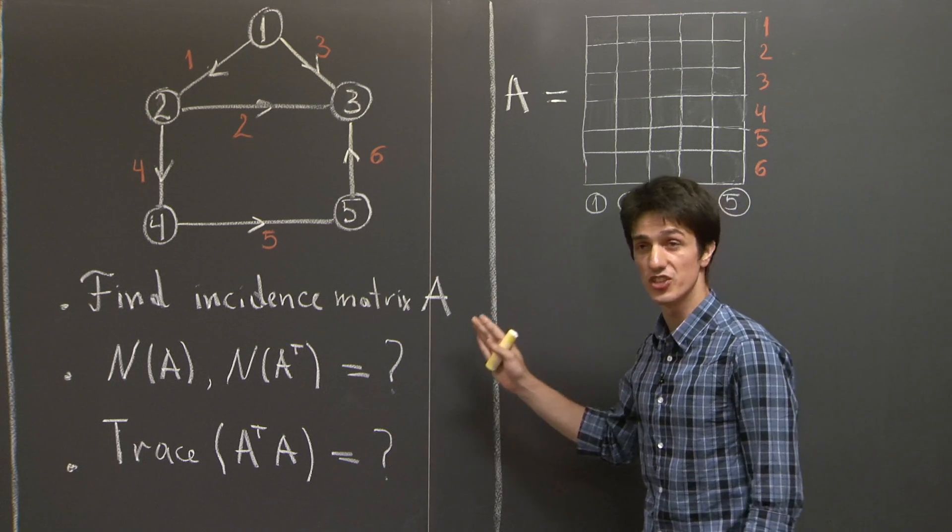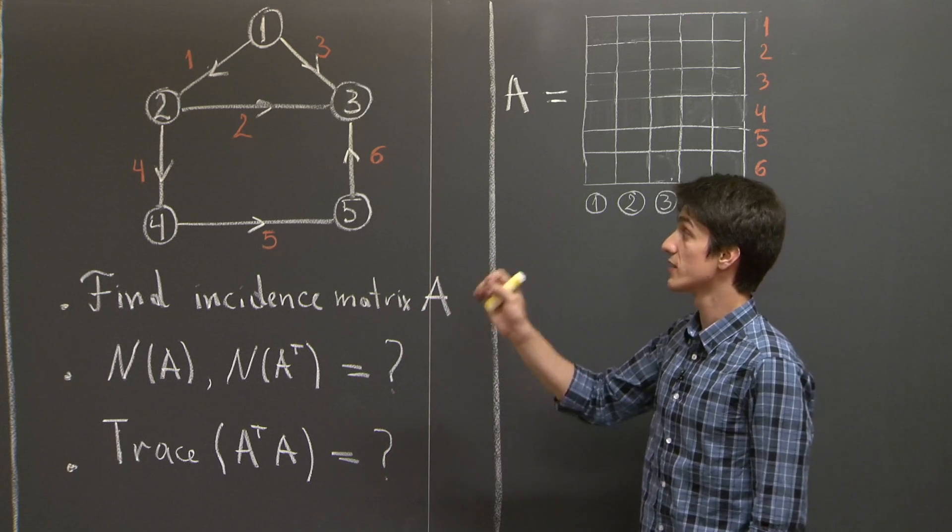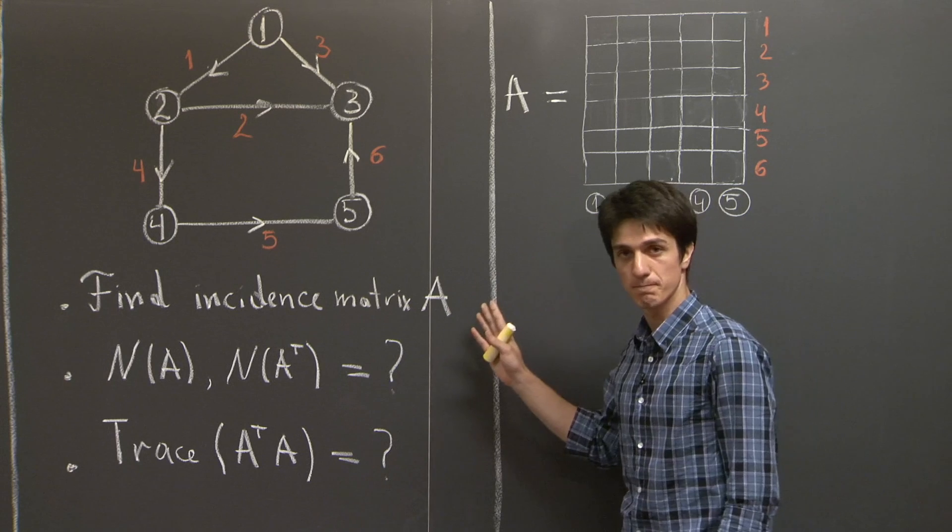And we're going to put a negative 1 in entry i, and 1 in entry j, if the corresponding edge connects node i to node j. OK,